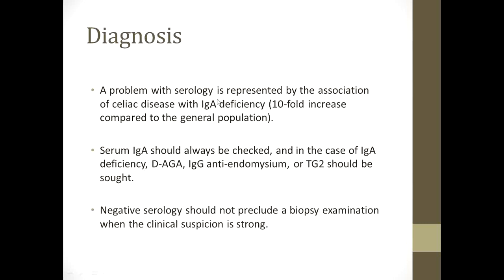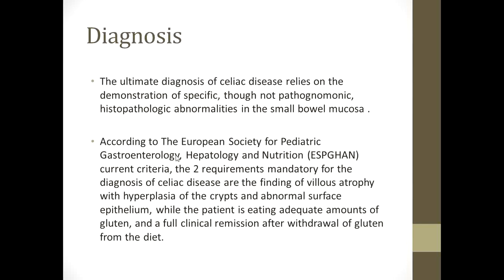A problem with serology is represented by the association of celiac disease with IgA deficiency. Serum IgA should always be checked, and in cases of IgA deficiency, anti-gliadin antibodies, anti-endomysium antibodies, or anti-tissue transglutaminase IgG antibodies should be sought. Negative serology should not preclude a biopsy examination when the clinical suspicion is strong — if your clinical suspicion is high, even with negative serology, you should proceed to histological diagnosis.